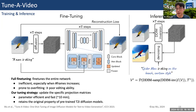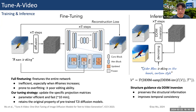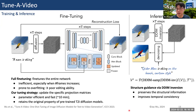During sampling, we use DDIM inversion to get the latent noise and perform denoising on this inverted latent noise. This is beneficial to preserve the structure of the original video and also improves temporal consistency, as we show in the ablation study.